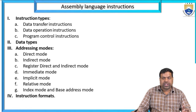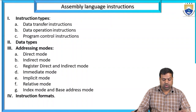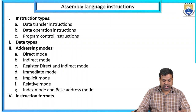There are so many types of instruction types: data transfer instructions, data operation instructions, and program control instructions. The second topic is data types, and the third one is addressing modes — direct mode, indirect mode, register direct and indirect mode, immediate mode, implicit mode, relative mode, index mode, base address mode — and finally instruction formats. These are all under Assembly Language Instructions.